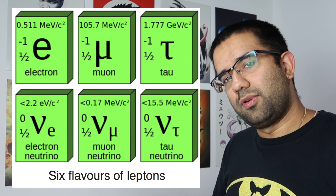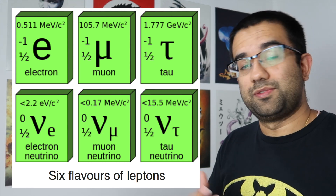Leptons are electron, muons, and tau, as well as their neutrino versions, and quarks are the things that make up protons and neutrons. There are six flavors of quarks and leptons. For the positive, they're up, charm, and top, and for the negative, they're down, strange, and bottom. I promise you, this is actually what the physics terms are — I'm not just making these up.